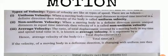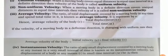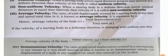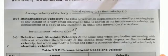Hence, average velocity of the body V is equal to total displacement delta x upon total time delta t. If the velocity of the moving body in a definite direction is changing with uniform rate, then average velocity of the body is equal to initial velocity U plus final velocity V by 2.